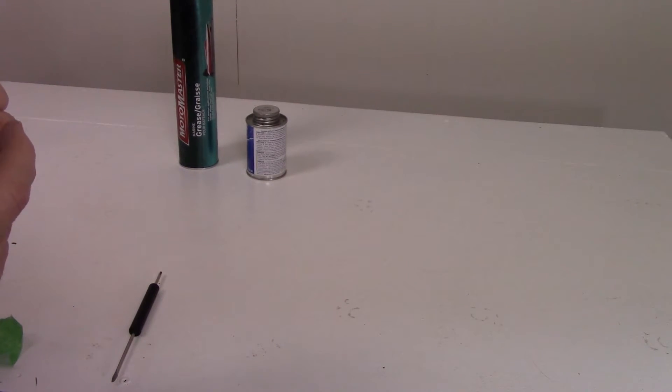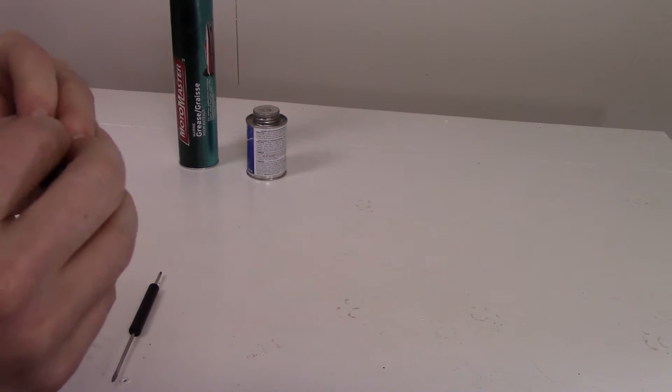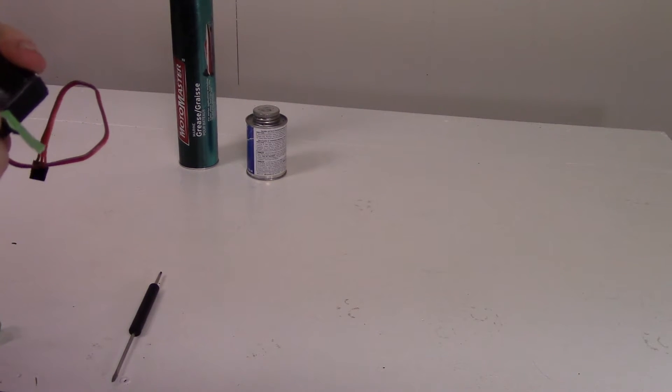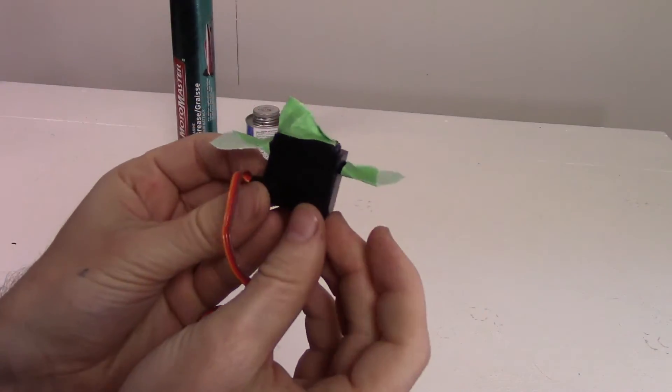And then the other piece we want to tape off is the servo horn, because we don't want to be electrical taping that all up. That's about all I do for taping off.